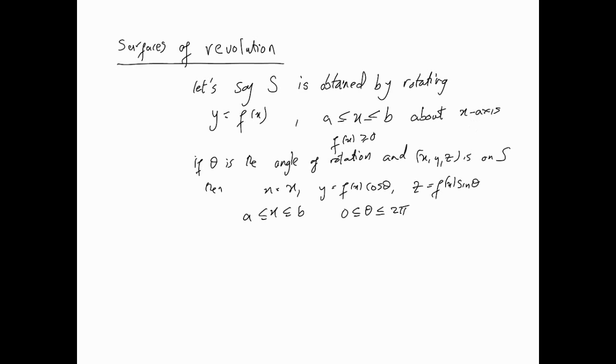is greater than or equal to zero (a positive function), then if θ is the angle of rotation and (x,y,z) is some point on the surface, the parameterization is: x = x, y = f(x)cos(θ), z = f(x)sin(θ), where f(x) is the function being rotated about the x-axis. There's your vector function, your parameterization.